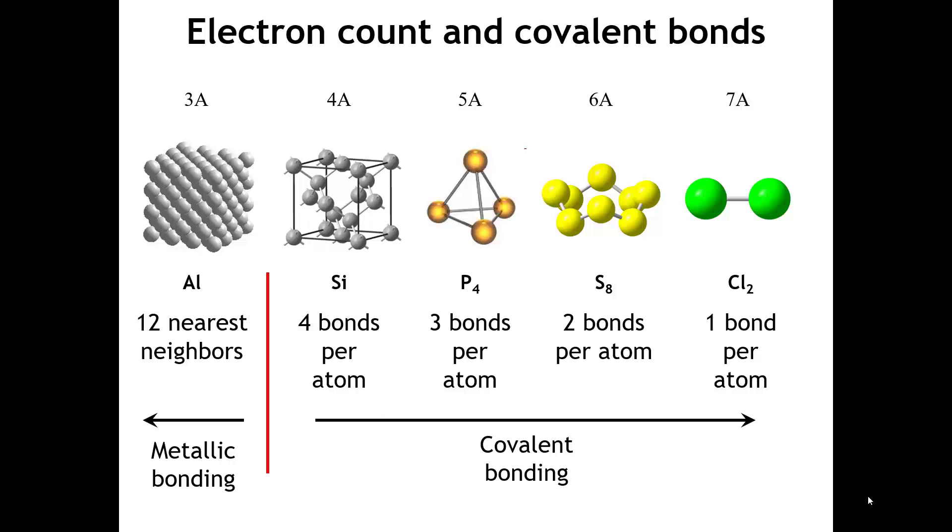Moving once again to the left, column 5A, the pnictogens. Then we have only five valence electrons, three short of an octet, so we need to make three bonds per atom. And so, in the various polymorphs of phosphorus, here I show the white phosphorus, you always see phosphorus making three bonds to its neighbors.